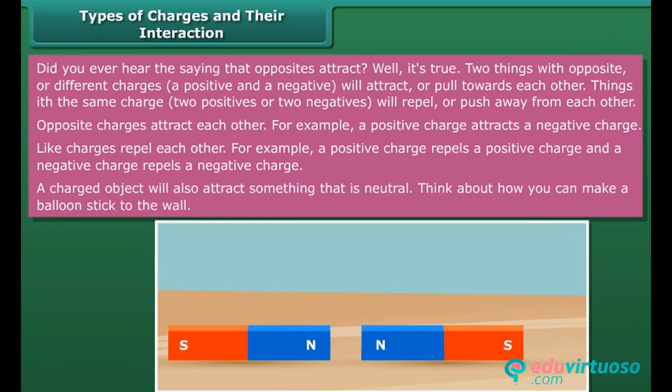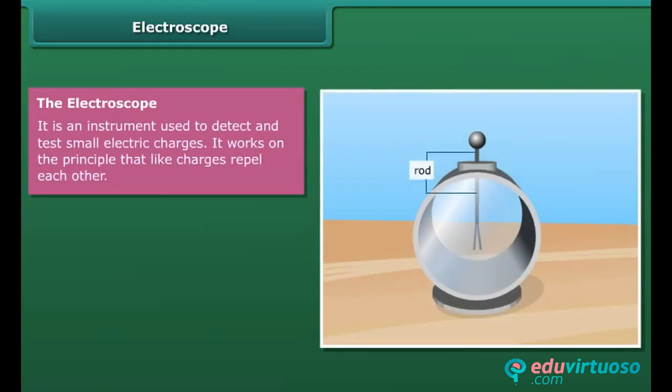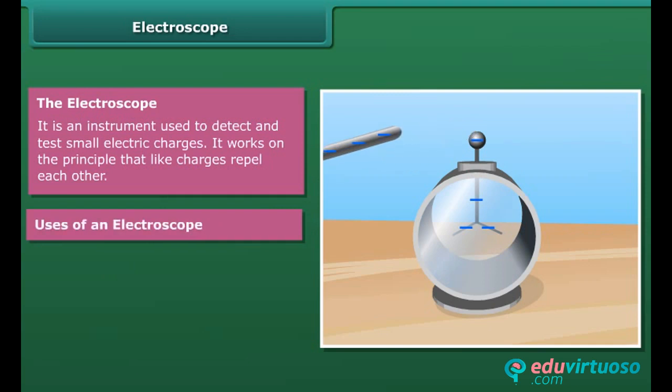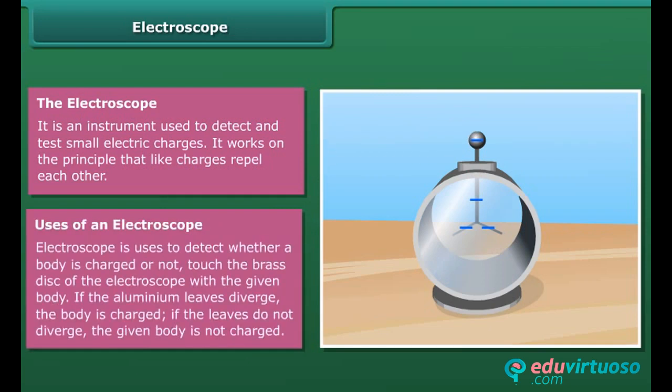The electroscope is an instrument used to detect and test small electric charges. It works on the principle that like charges repel each other. To detect whether a body is charged, touch the brass disc of the electroscope with the given body. If the aluminium leaves diverge, the body is charged. If the leaves do not diverge, the given body is not charged.